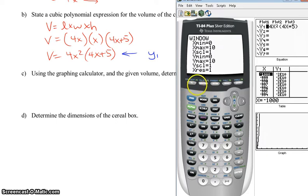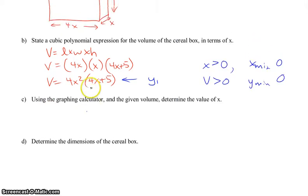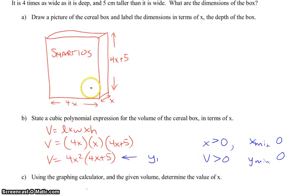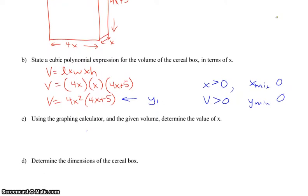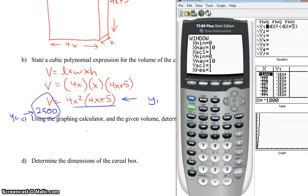Now, there's one little crucial thing that we are forgetting. It said, using the graphing calculator and the given volume. What given volume, you ask? Well, in the question, the volume that was given up in the question here was 2500 centimeters cubed. See this? So, we are going to actually, really what we're trying to do then is solve when V is 2500. So, in Y1, we put this, right? But, in Y2, we are going to put 2500. Which means, let's go back to Y equals. In Y2, we're putting 2500.